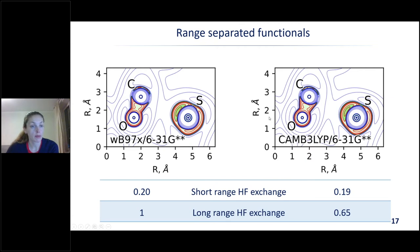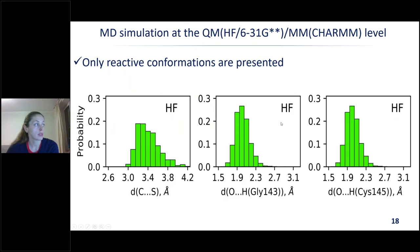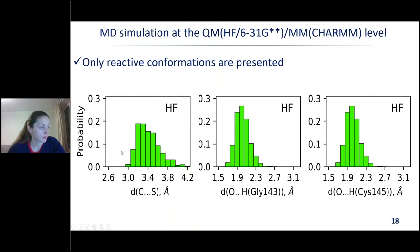We also checked range-separated functionals, which have the same amount of Hartree–Fock exchange at short ranges — around 20% — and a much more pronounced Hartree–Fock exchange term at long ranges. Here we see a really more pronounced activation of the carbonyl carbon atom. To be absolutely confident in our conclusion, we also performed MD simulation with the QM/MM potential where the QM subsystem is treated at the Hartree–Fock level. Despite all the known problems with no dynamic correlation, it is the method with 100% Hartree–Fock exchange, and all frames from these simulations were found to be reactive.